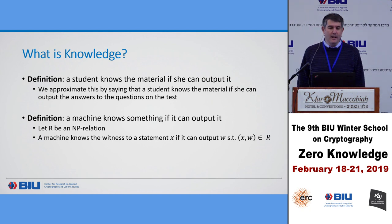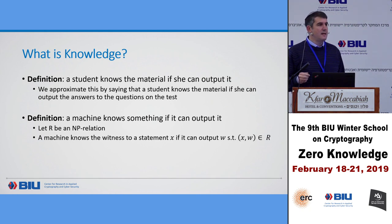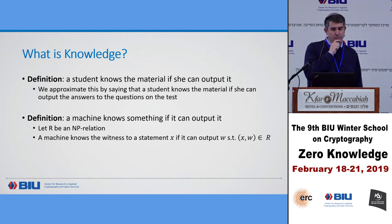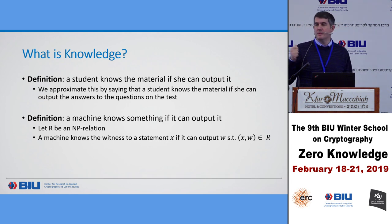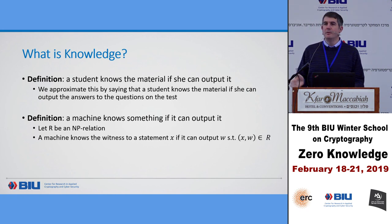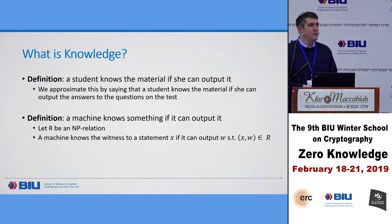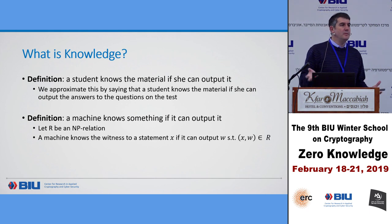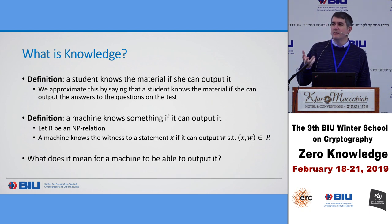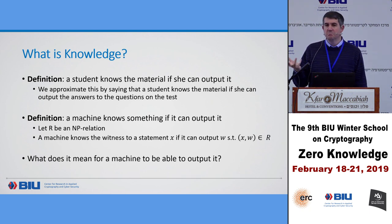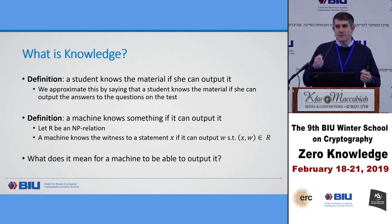If we have an NP relation R and a statement X, we say that a machine knows the witness to the statement if it can output some W such that (X, W) is in that NP relation. If you can output a witness to the statement, then you know that witness. But what does it mean for a machine to be able to output it? If you run the machine and it outputs the witness, then it knows the witness — but we're going to talk about machines doing other things.